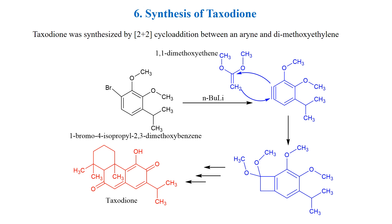Another application is the synthesis of taxodione. The precursor for taxodione was synthesized by a 2+2 cycloaddition reaction of isopropyl dimethoxybenzyne and 1,1-dimethoxyethene.